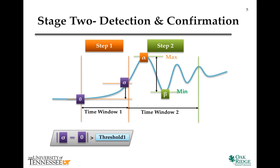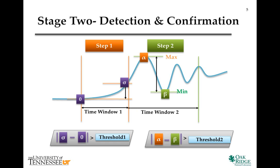The program will then proceed to calculate the maximum and minimum angle value over the second time window. If this difference is over a certain threshold in multiple units, the oscillation is confirmed.